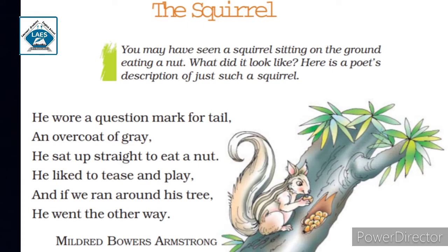Poet boulte hain ki squirrel ki tail eck cushion mark jesi dikhti hai. Aur woh eck grey color ka coat pahenta hai. Poet ne grey color ka coat is liye bola hai kyunki squirrel ki body mein grey color ka fur hote hai. Squirrel ki furry grey body ko overcoat ke saath compare kiya gaya hai. Jab squirrel nuts khaata hai tab woh seedha baithta hai. Usse kheelna bhoat pasand hai. Poet bhi squirrel ke saath hide and seek kheelta hai. Aur jab aap squirrel ke tree ke aaspas daudoge, taw woh doosari side chala jata hai.